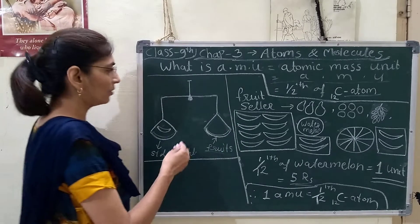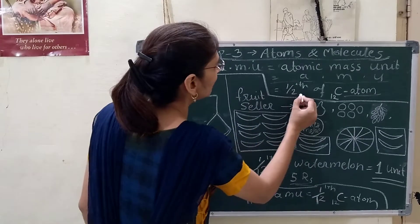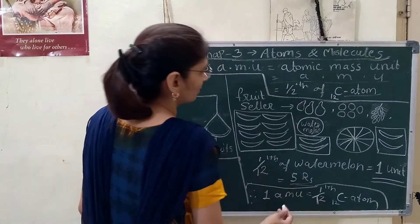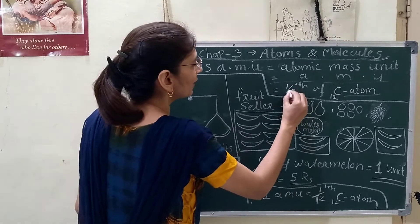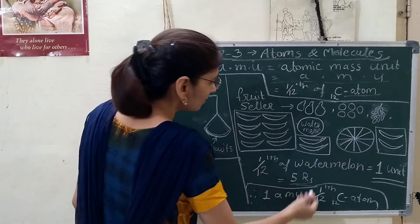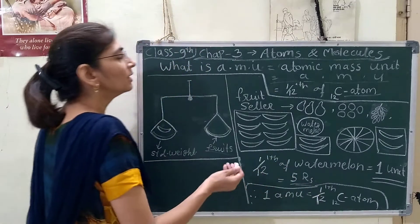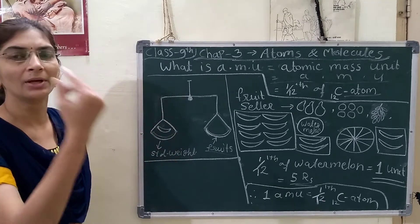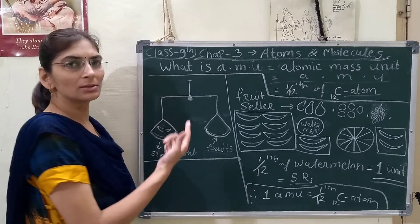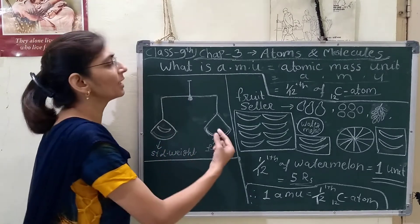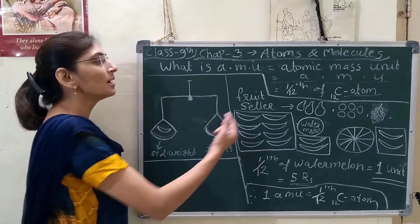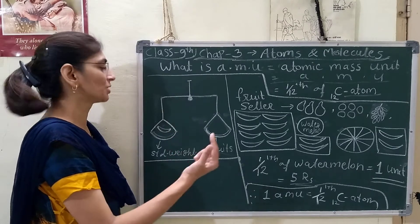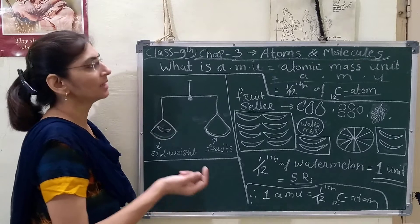In that activity, we see how the scientist took one twelfth of a carbon atom as a relative mass equal to one atomic mass unit. Scientists considered one twelfth of the carbon-12 atom as one atomic mass unit, just as we use milligrams or kilograms for measuring mass.